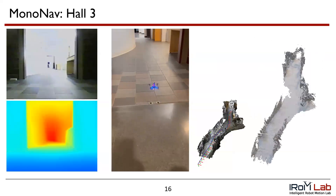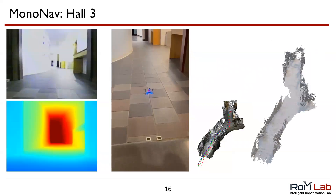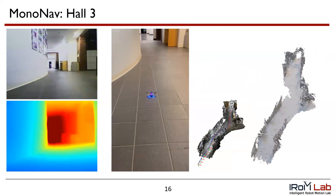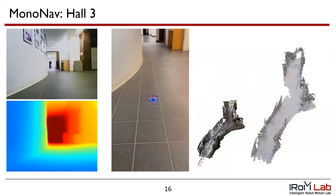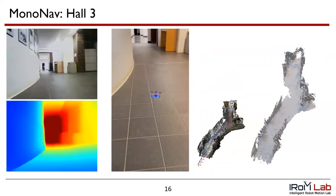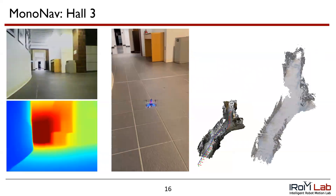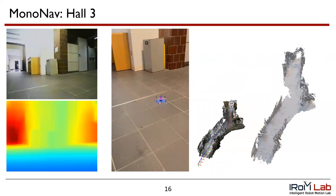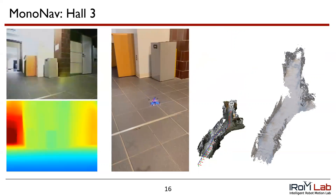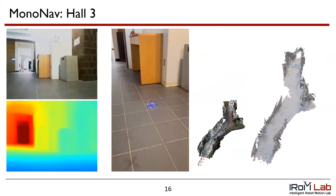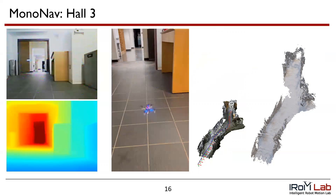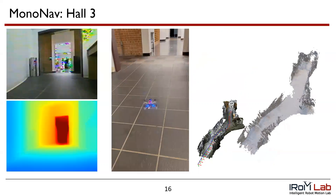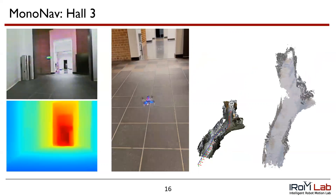In another example, MonoNav navigates a long hallway straight.